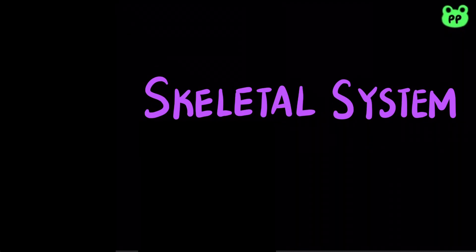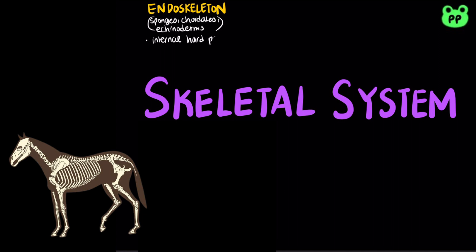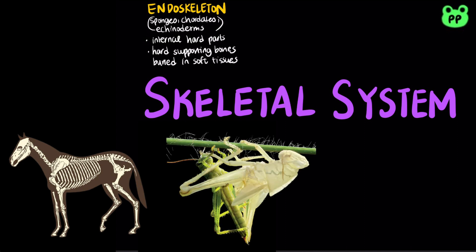There are three main types of skeletons in animals. Endoskeletons are found in sponges, echinoderms, and chordates. It consists of internal hard-supporting elements such as bones buried in soft tissue.